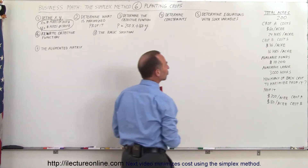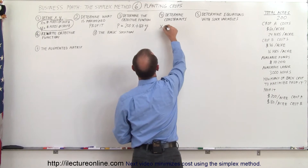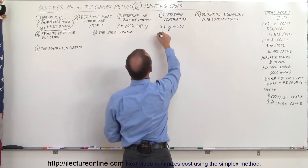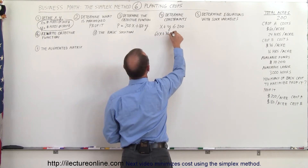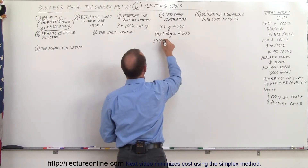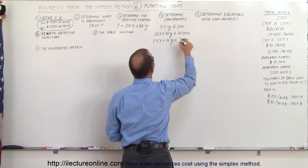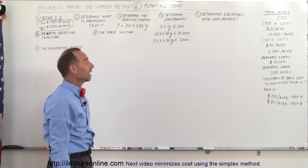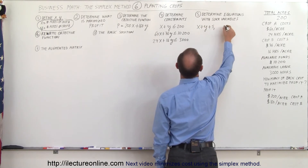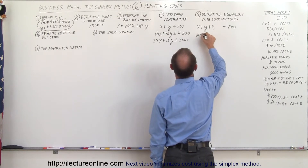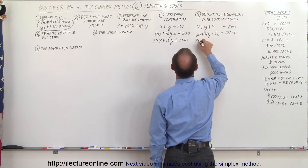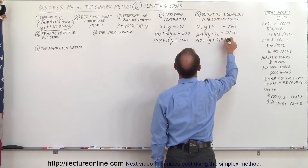We determine the constraints. We have a constraint on the number of acres: x plus y must be less than or equal to 200. We're constrained by the amount of dollars: 60x plus 76y must be less than or equal to 10,200. And we have a third constraint on hours: 24x plus 16y must be less than or equal to 3,000. We have three constraints, so we need three equations with three slack variables. The equations are: x + y + s1 = 200; 60x + 76y + s2 = 10,200; and 24x + 16y + s3 = 3,000.